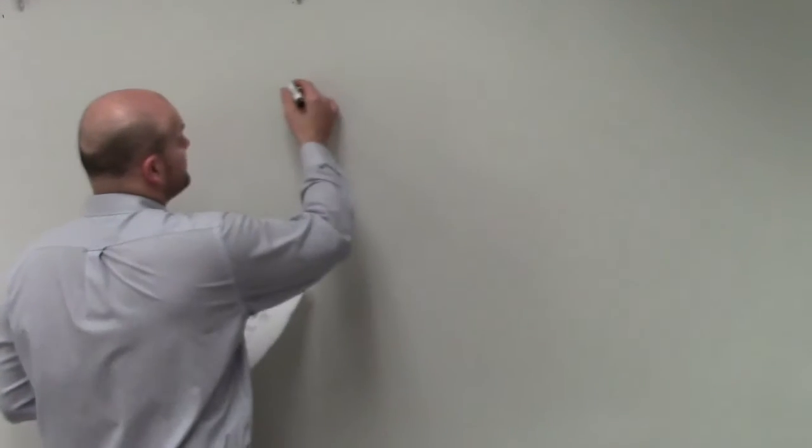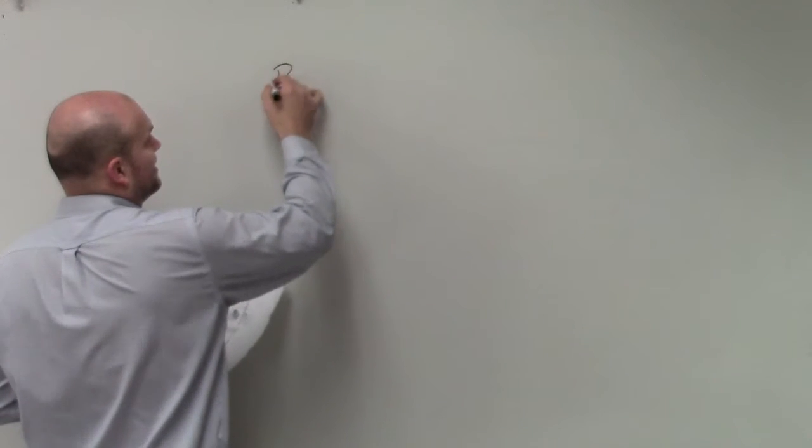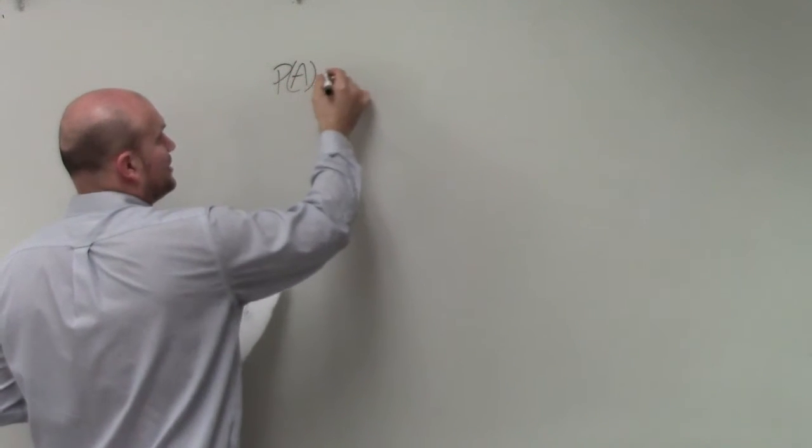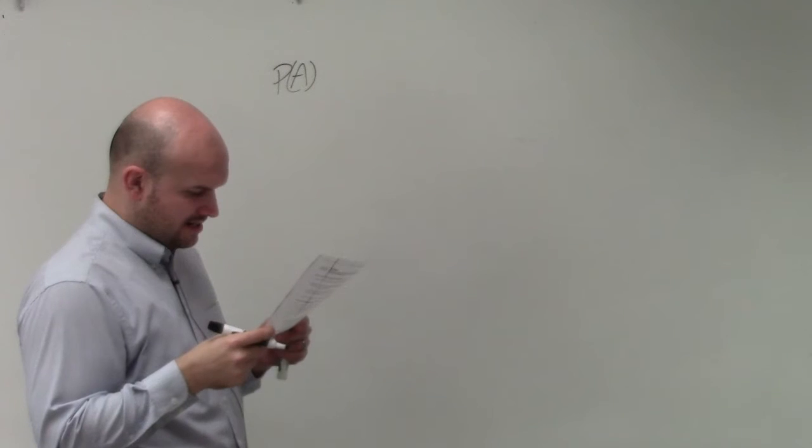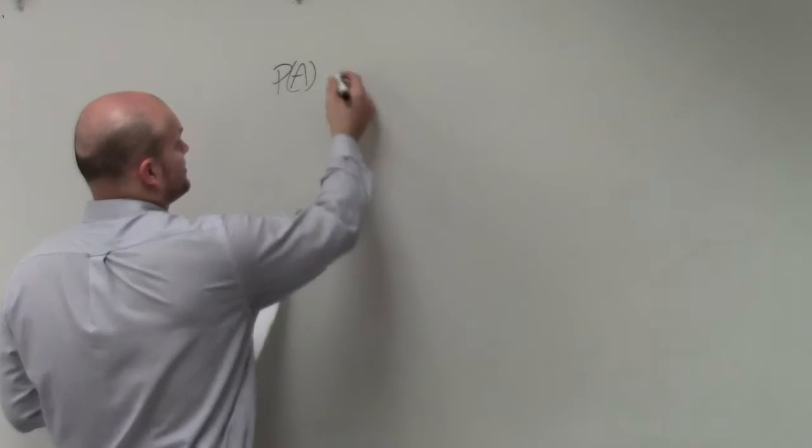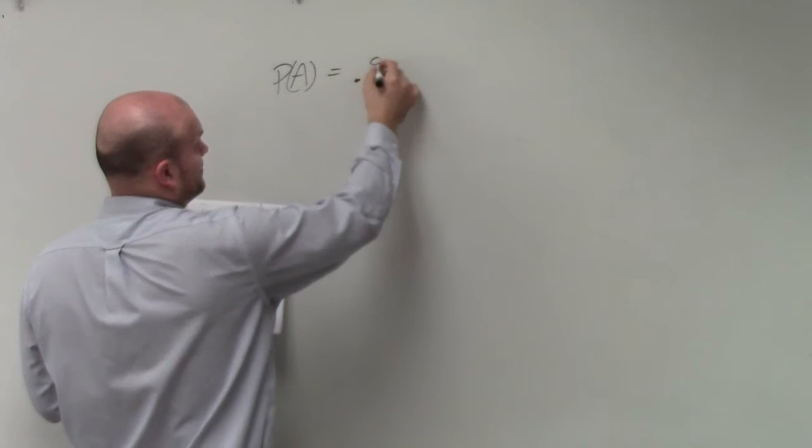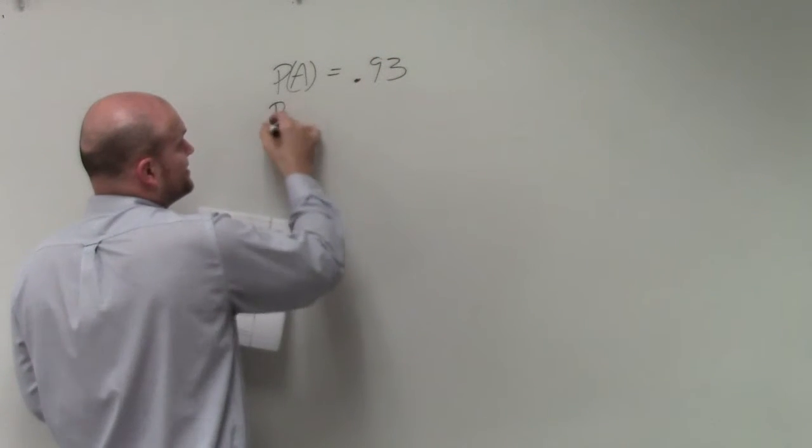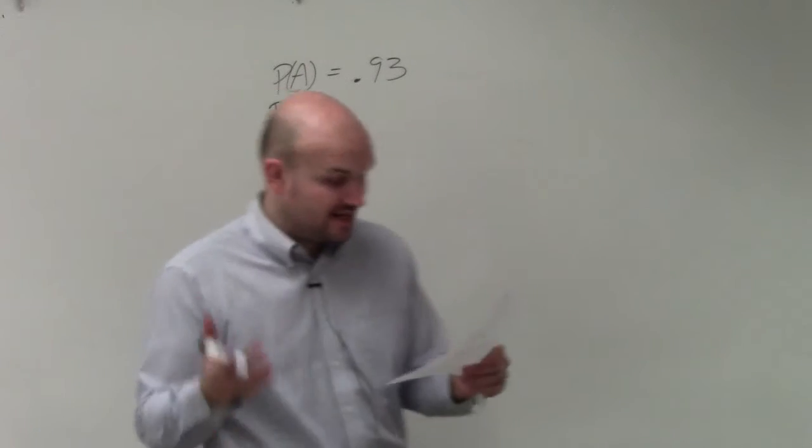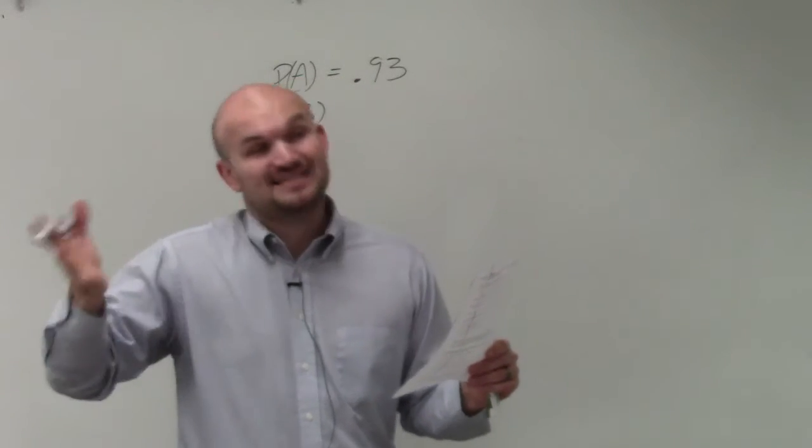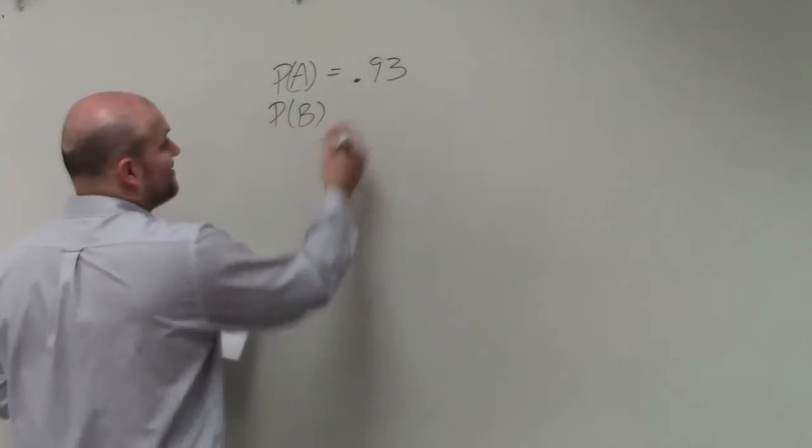So we have some multiple events. We have, you could basically say that probability A would be the first part, which is 93%. Then the second event is the next part, right? It says what is the probability that the next five parts? So we have five parts. We have five events.